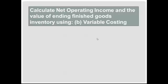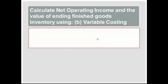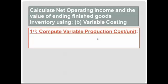Now we'll look at variable costing — calculating both income and valuing the ending finished goods inventory. We need to first compute the variable production cost per unit. We want to include all variable production costs: direct materials, direct labor, and variable overhead. We know that $48,000 of variable production costs was incurred to produce 12,000 units, so our variable production cost per unit is $4.